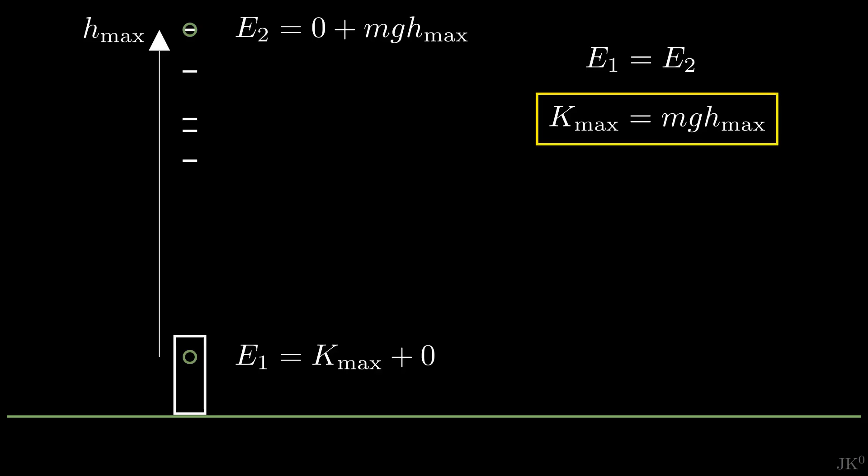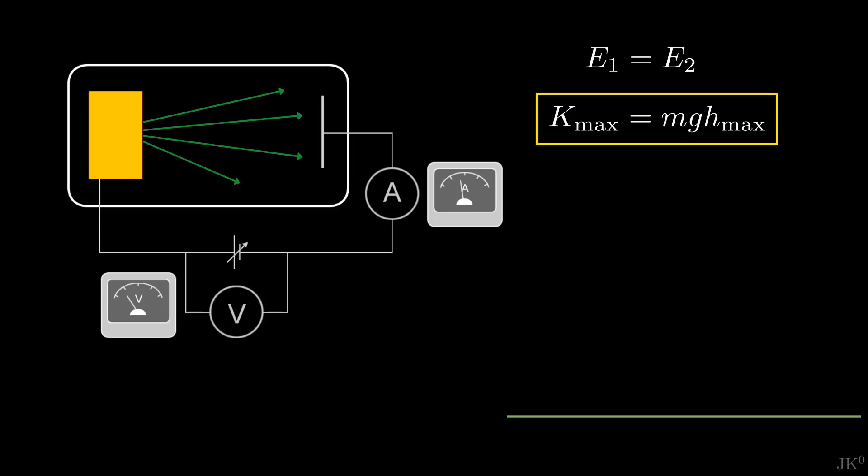What Millikan did was quite similar, but instead of gravity slowing a tennis ball, he used a potential difference slowing the photoelectrons. Instead of measuring the maximum height, he measured the voltage that stops the photoelectrons. And instead of the mass, the relevant quantity needed is the electric charge, and Millikan has just measured the most precise value of the charge of the electron. Here we see a nice synergy between Millikan's projects.